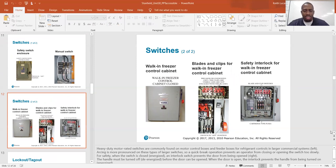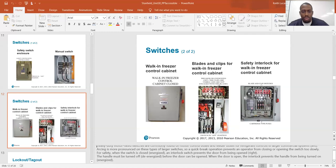Heavy-duty motor-rated switches are commonly found on motor control boxes and feeder boxes for refrigerant controls in large commercial systems. Arcing is more pronounced on these types of large switches, so a quick break operation prevents an operator from closing and opening the switch too slowly. For safety, when the switch is closed, an interlock switch prevents the door from being open. The handle must be turned off before the door can be opened. When the door is open, the interlock prevents the handle from being turned on.